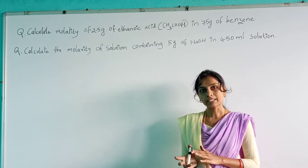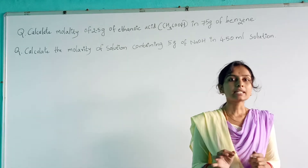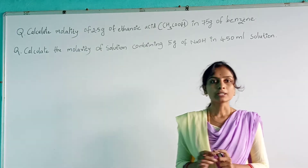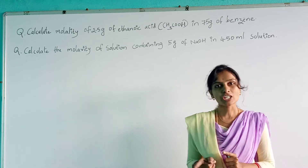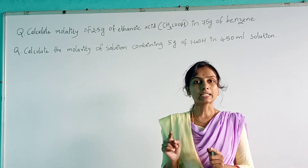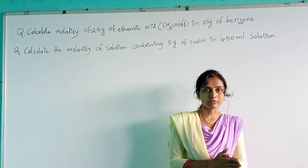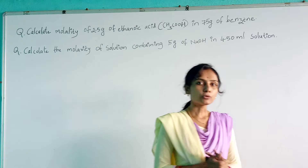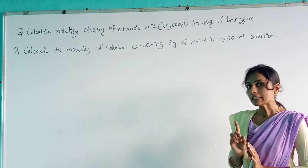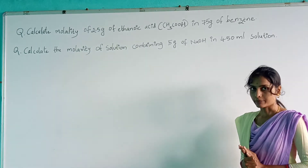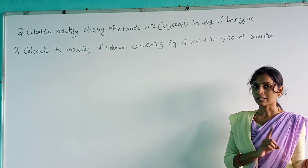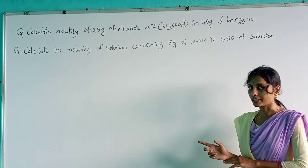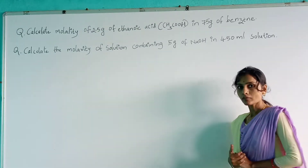What is molality? Molality refers to the number of moles of solute present in 1 kg of solvent. Similarly, molarity refers to the number of moles of solute which is present in 1 liter of solution. So this is the difference — molality refers to 1 kg and molarity refers to 1 liter of solution. If that is clear, we will move on to the problems.